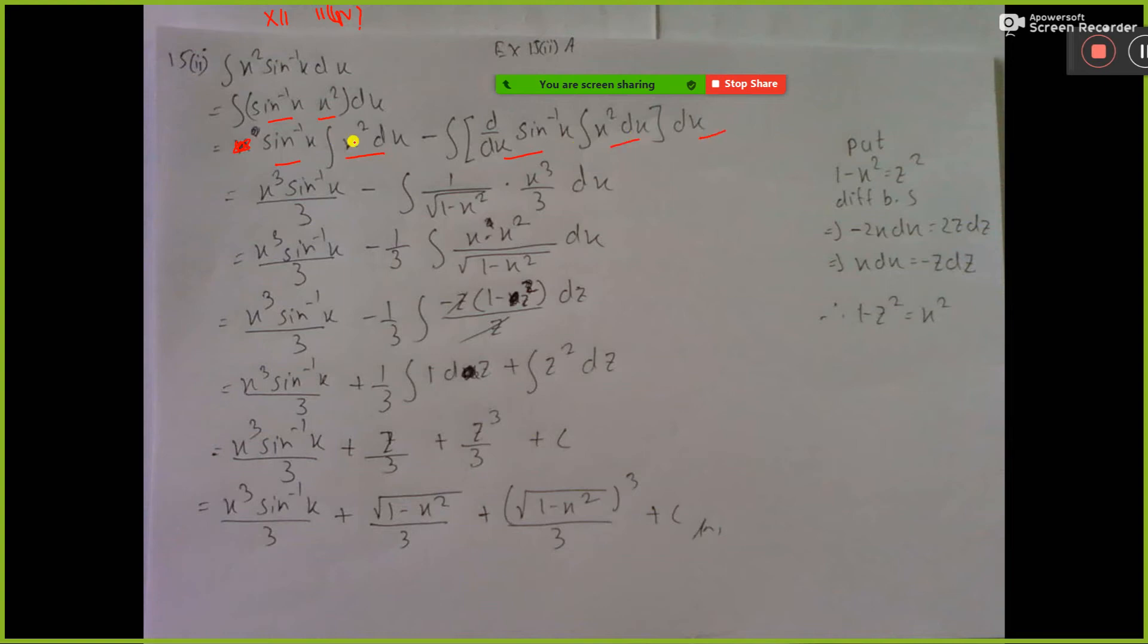So x square integration x cube by 3, sin inverse x differentiation 1 by 1 minus x square, x square integration x cube by 3.